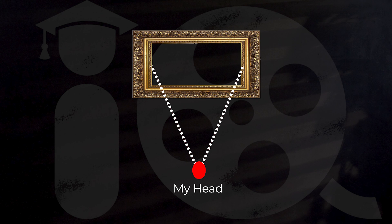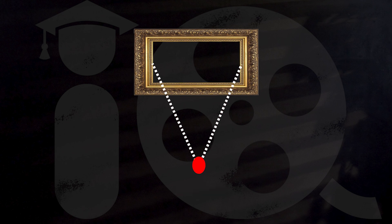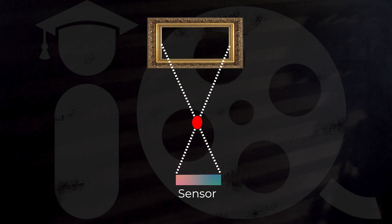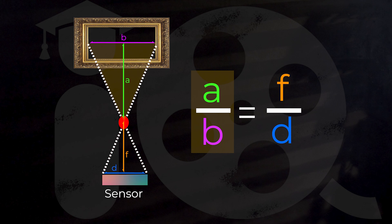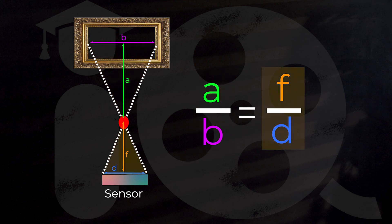If we want to figure out the focal length needed to achieve this angle of view, all we have to do is extend the lines of the angle of view through the bottom point and create a similar triangle with a base equal to the dimension of our sensor. Because these are similar triangles, we know that the ratio of the height and width of both triangles are going to be the same. So the ratio of the distance to the frame and the dimension of the frame is equal to the ratio between the focal length and the dimension of the sensor.